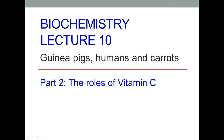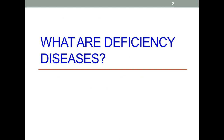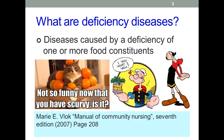Welcome to Part 2 of Guinea Pigs, Humans and Carrots, in which we'll have a look at the roles of vitamin C in some detail, mostly in the context of deficiency diseases. So what does this term mean? When you use a term like that, you should always find a formal definition and reference it. Surprisingly it took a little bit of tracking down — most books and papers just use the term without defining it, which is a bit annoying.